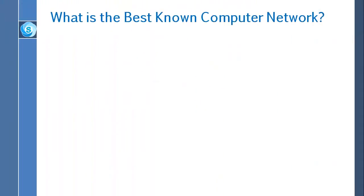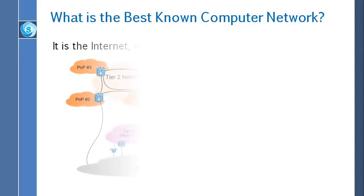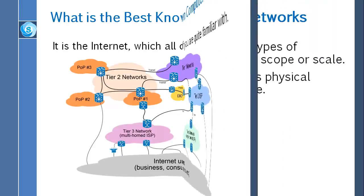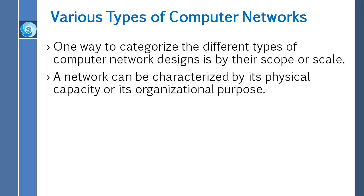Do you know the best-known computer network today? It is the internet, which all of you are quite familiar with. One way to categorize the different types of computer network designs is by their scope or scale. A network can be characterized by its physical capacity or its organizational purpose; use of the network including user authorization and access rights differ accordingly.